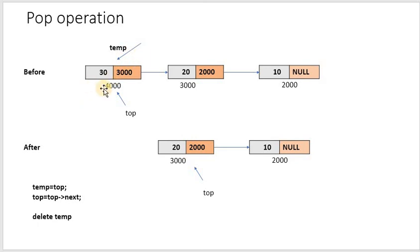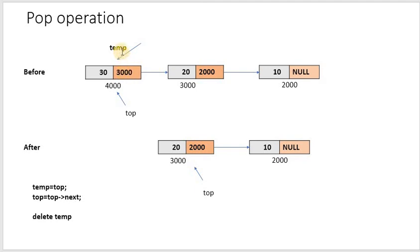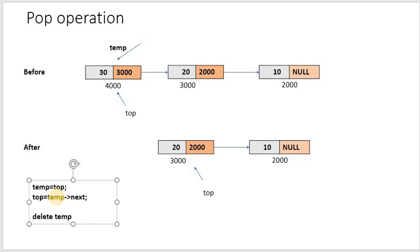After deleting this node, you have two nodes left. Now top has to refer to the previous node, that is 20. Before doing this, we check what is in temp or top. Top has top->data and top->next. Since we assigned this as temp, it becomes temp->data and temp->next. When you check the value in next, you get 3000, which refers to the previous node containing 20. We want this as top, so we say top is equal to temp->next.